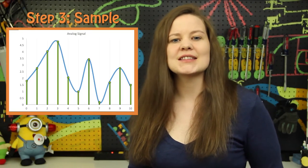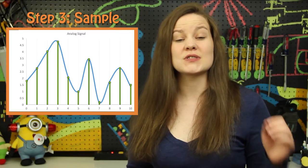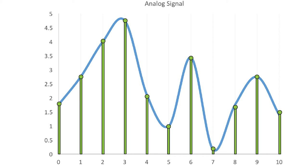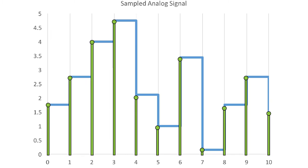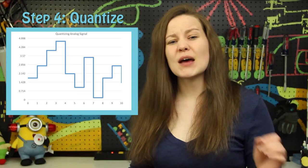Step three is the analog to digital converter sampling the signal at regular intervals. It is going to hold this value as the digital value is translated. This is called a sample and hold process, and the faster you are sampling, the smoother the curve is that you're going to recreate.